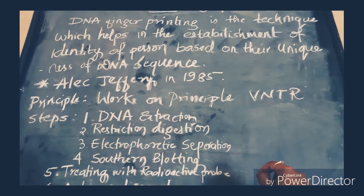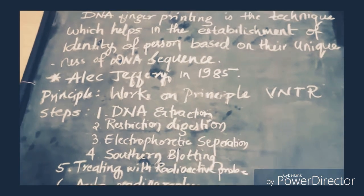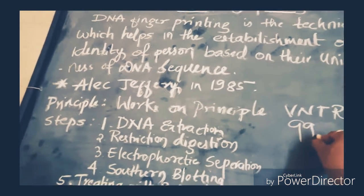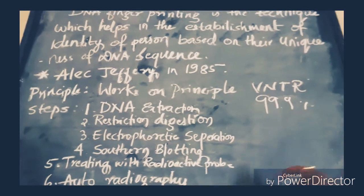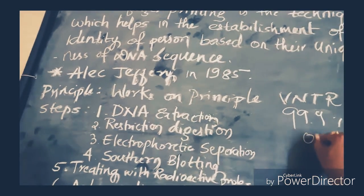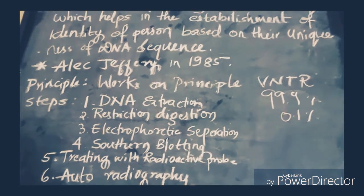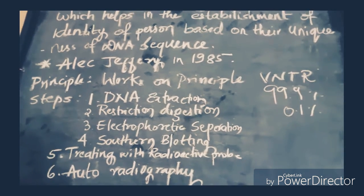About 99.9% of our DNA sequences are similar. Only 0.1% differs from person to person. It is important to know that there is an unusual sequence of bases of 10 to 15 pairs.